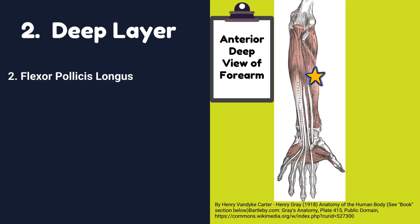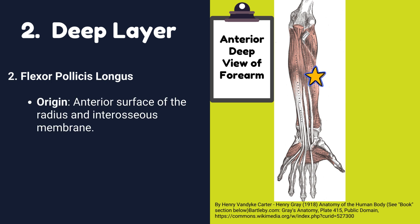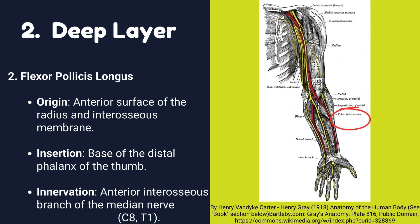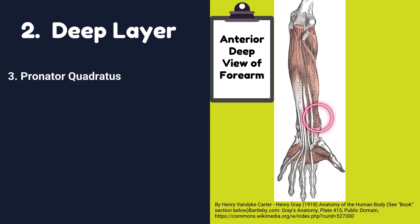Number two: Flexor pollicis longus muscle. Origin: it originates from the anterior surface of the radius and interosseous membrane. Insertion: it is inserted into the base of the distal phalanx of the thumb. Innervation: it is innervated by the anterior interosseous branch of the median nerve.